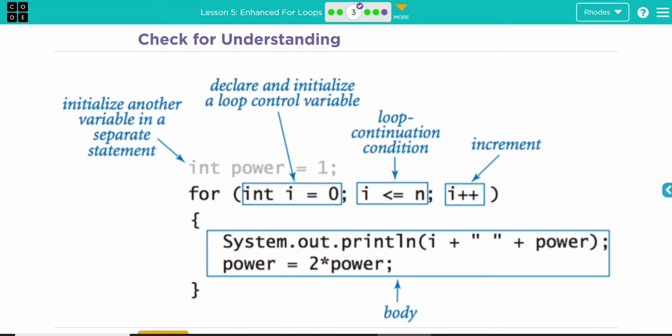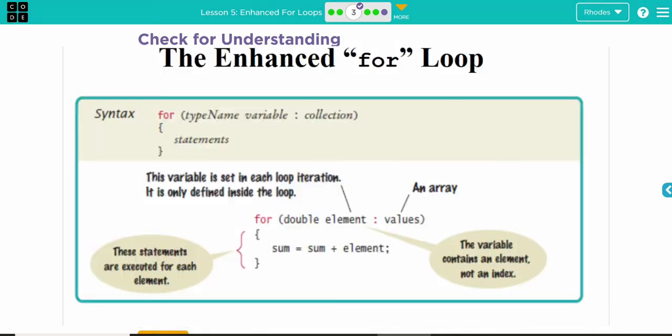Loop control variable. Again, we've seen this. This is part of a for loop. It's just the index we're at. Enhanced For Loop. That's what we've been talking about this entire lesson. That's our shortcut when we want to look through an entire array.